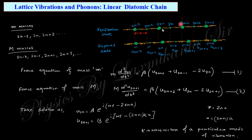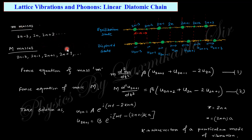The equilibrium separation between the two atoms is a. If the atoms are displaced, u₂ₙ and u₂ₙ₋₁ represent the displacements of those atoms. The atoms at positions 2n−2, 2n, 2n+2 are small m masses, and the atoms at 2n−3, 2n−1, 2n+1, 2n+3 are capital M masses.